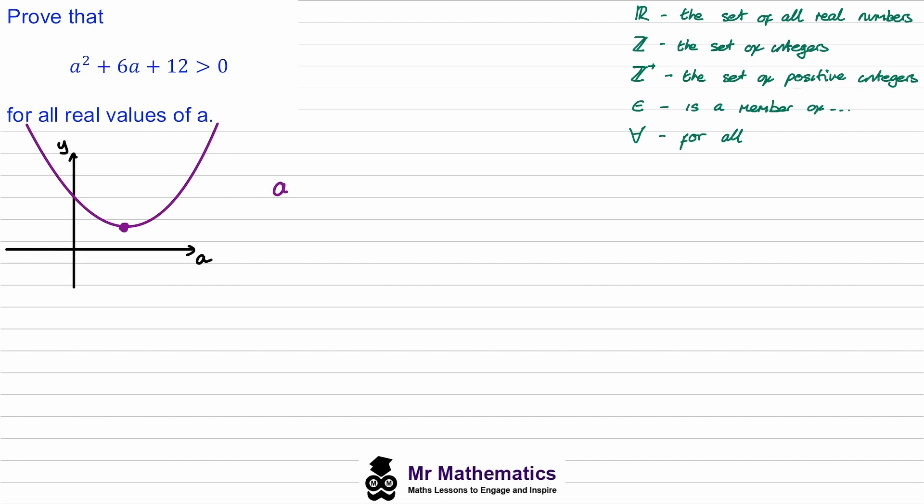If we have a² + 6a + 12, this is exactly the same as (a + 3)² with half this value of 6. We complete the square by taking away the 3² which is 9, then we add back on this 12. We can tidy this up so we have (a + 3)² + 3.